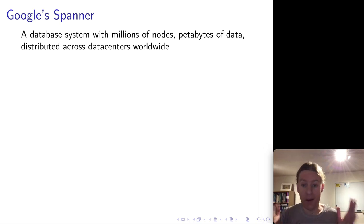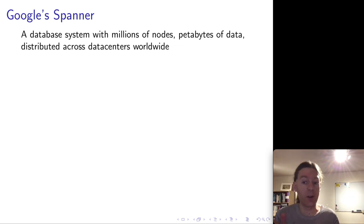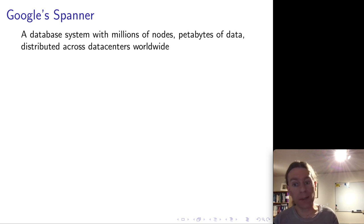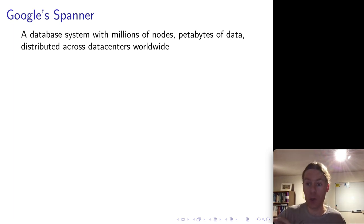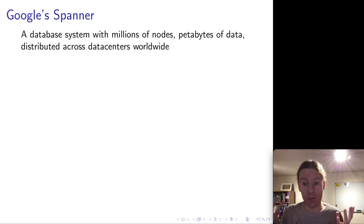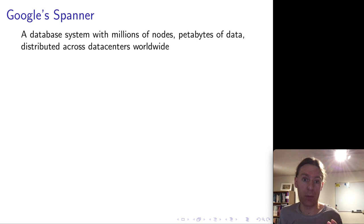We've talked about eventually consistent systems. For the last section, let's switch back to very strongly consistent systems. What I'd like to tell you about is a very interesting database system developed by Google called Spanner. This is a very large-scale database system intended to be used with huge amounts of data, with millions of nodes spread all around the globe. And nevertheless, despite this huge scale, we want to achieve very strong consistency properties.